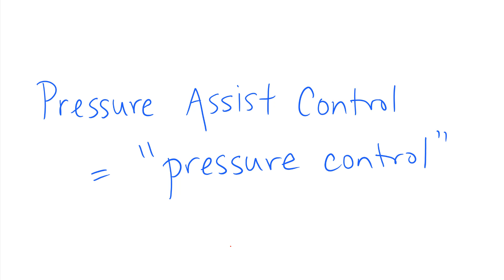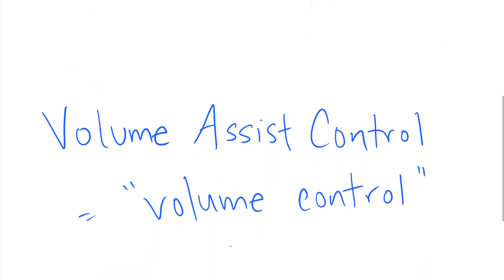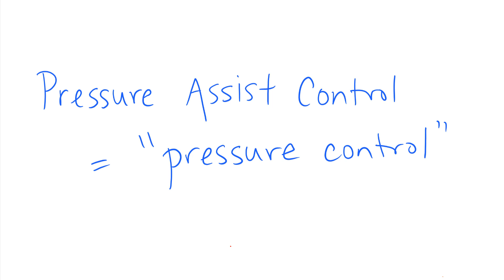There are two modes of ventilation you should be familiar with. The first is pressure assist control ventilation, also known as pressure control or PCV. In pressure assist control ventilation, look at the words 'assist' and 'control' — this mode says that all breaths should be assisted, meaning triggered by the patient, and in case the patient doesn't trigger a breath, a backup controlled breath is delivered.